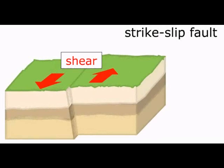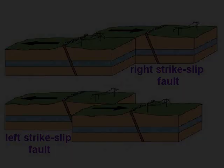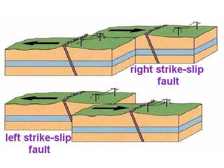Divergent and convergent plate margin movements cause normal and reverse faults. Transform plate margin movements cause strike-slip faults. When the whole plate moves, it is called a transform. But when there is movement on only a small segment, from a couple of kilometers to a few meters, we call these strike-slip faults. There are two types: strike-slip left, where the movement is to the left, and strike-slip right, where the movement is to the right.